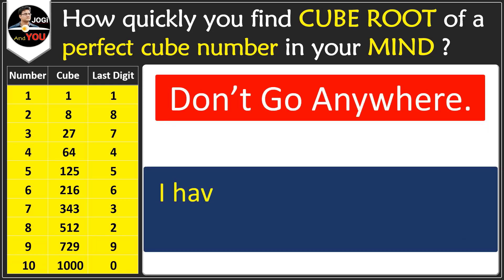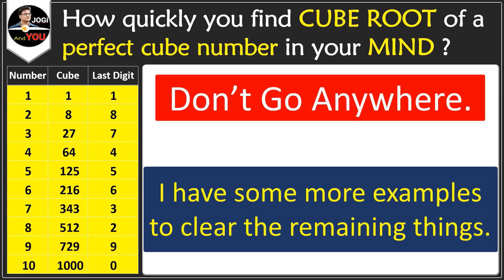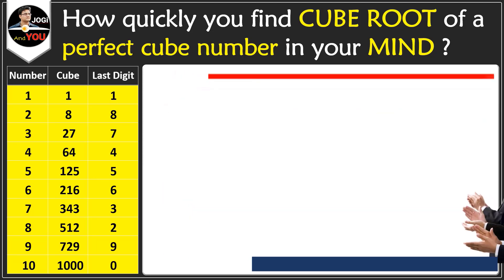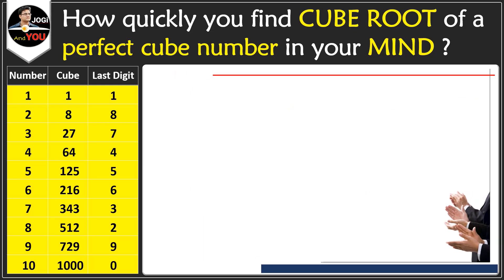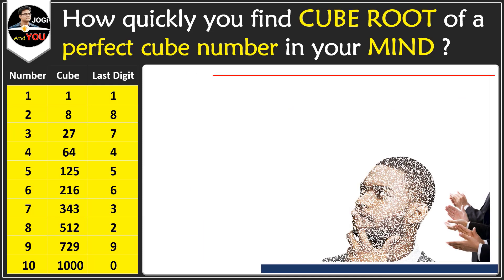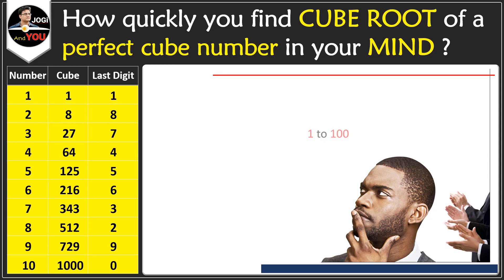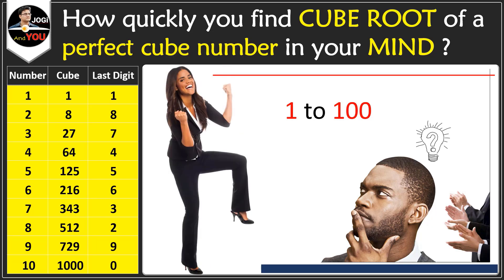Don't go anywhere — I have more examples. Here's why this trick can be useful: you can impress your friends. Ask someone to pick a number from 1 to 100 and think of it secretly — don't have them tell you the number. Tell them to cube that number on a calculator. Once they tell you the cubed number, you can instantly tell them the cube root using this table.